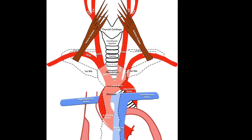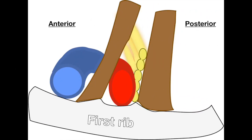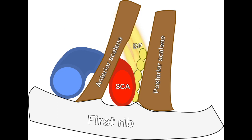The subclavian artery also passes behind the anterior scalene muscle which inserts onto the first rib. As shown by this lateral view from the left, the subclavian artery, together with the roots of the brachial plexus, passes in between the anterior and posterior scalene muscles. This landmark is called the scalene hiatus. Note that the subclavian vein passes anterior to the anterior scalene.